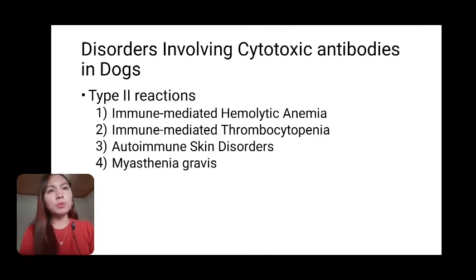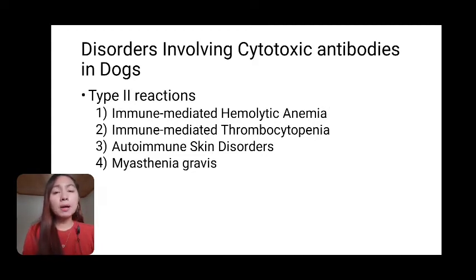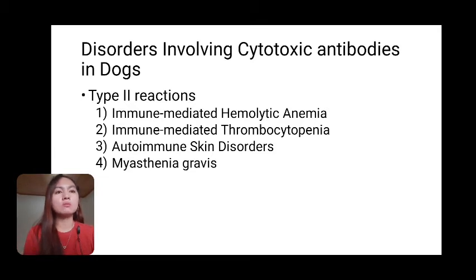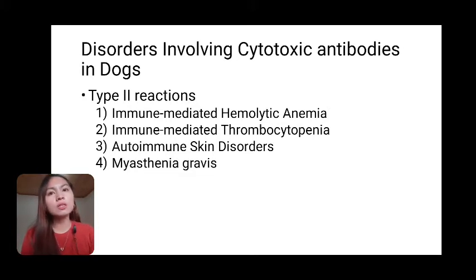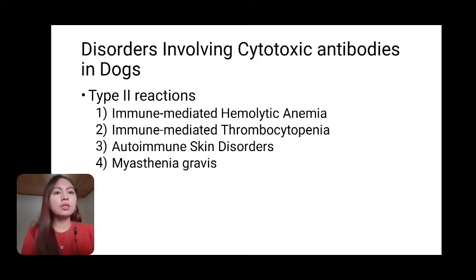Let's move on to disorders involving cytotoxic antibodies in dogs. This is a type 2 reaction that occurs when an antibody binds to an antigen present at the surface of its own cells. This leads to several types of diseases in dogs, such as anemia, blood clotting problems, and skin and muscle disorders. The type 2 reactions include immune-mediated hemolytic anemia, immune-mediated thrombocytopenia, autoimmune skin disorders, myasthenia gravis.